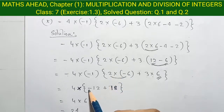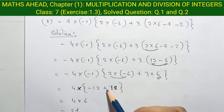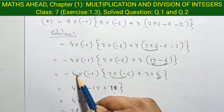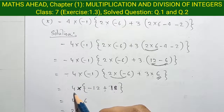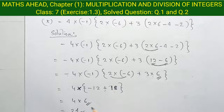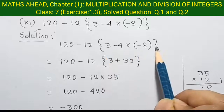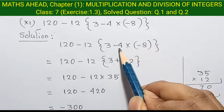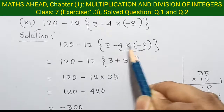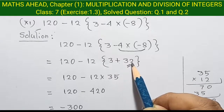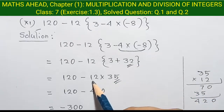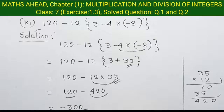Question 10: finally, minus 12 plus 18 equal to 6, and then multiplying them, the value is 24. Question 11: we will solve the curly bracket because this is the multiplication. If we solve this part, we solve 4 minus 8: so 4 into 8 equal to 32. So next, 3 plus 32 equal to 35. Next step, we will multiply by 420, and finally 120 to 420, and finally the value is 300.